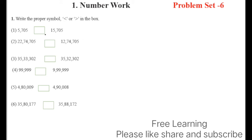Here the numbers are given. To find the smaller and bigger number, you have to see the number of digits. Wherever there are more digits, that number will be bigger. So count: one, two, three, four, five — there are five digits here and four digits there, so this number will be bigger.